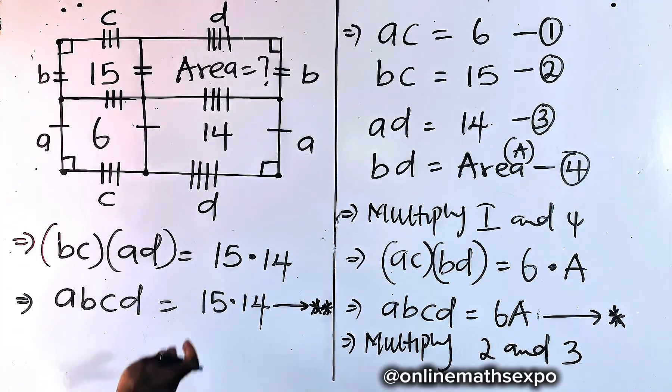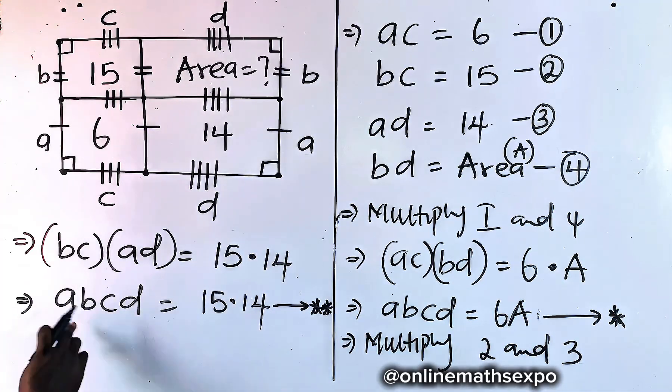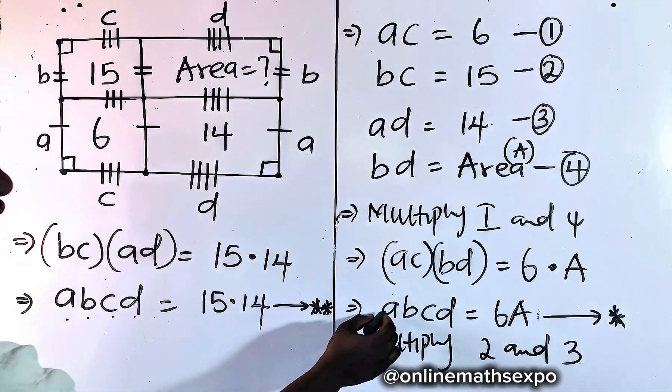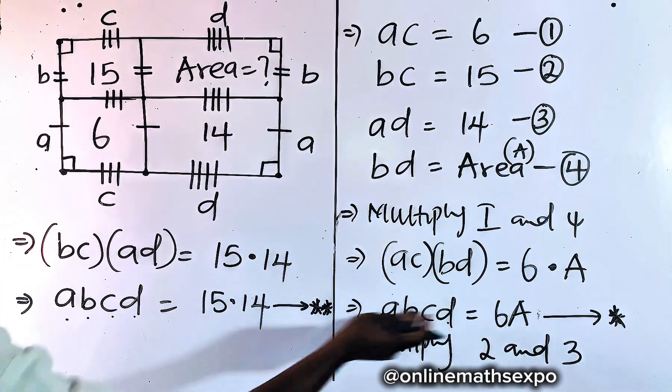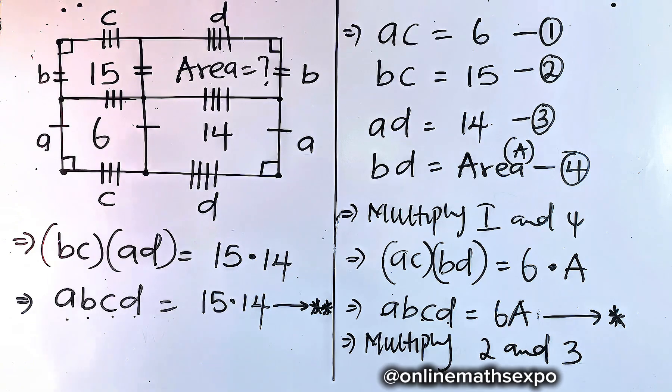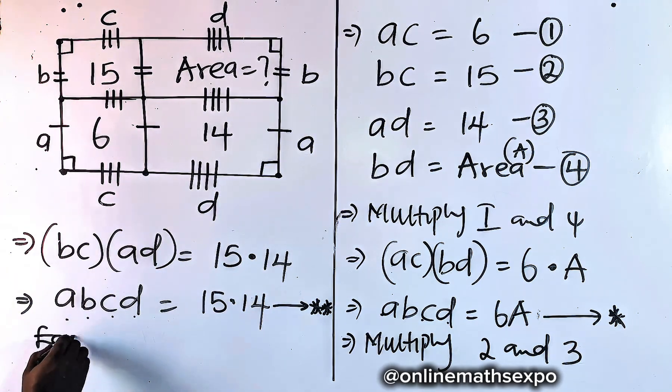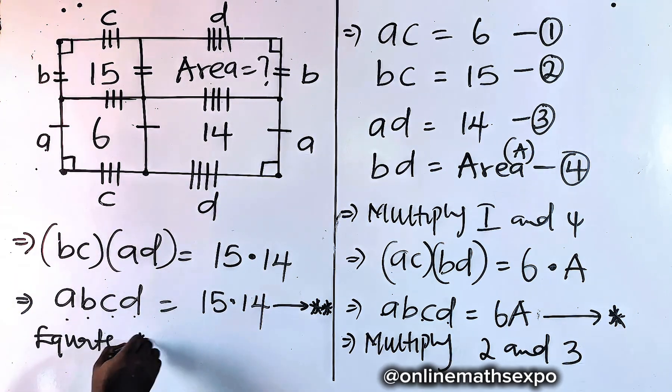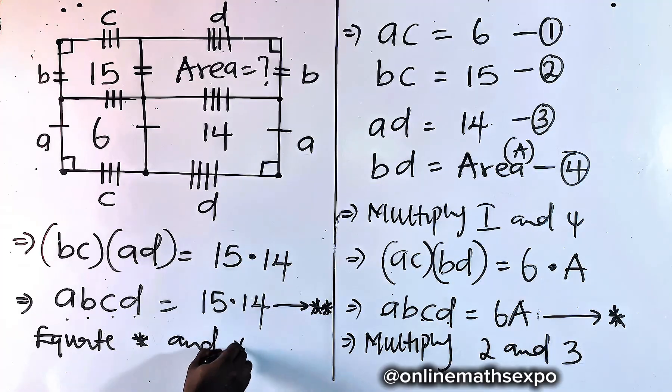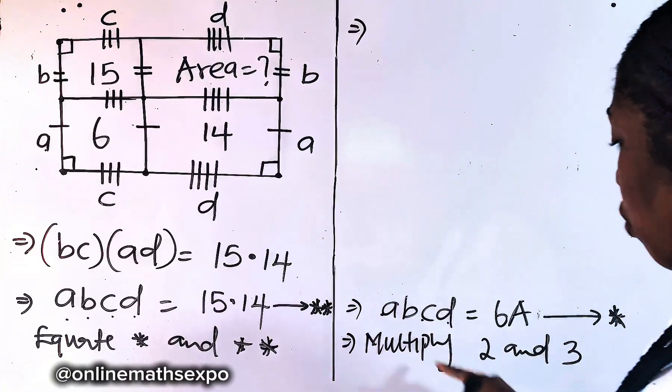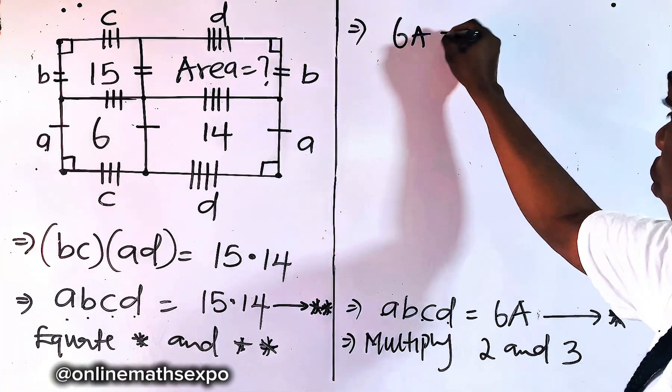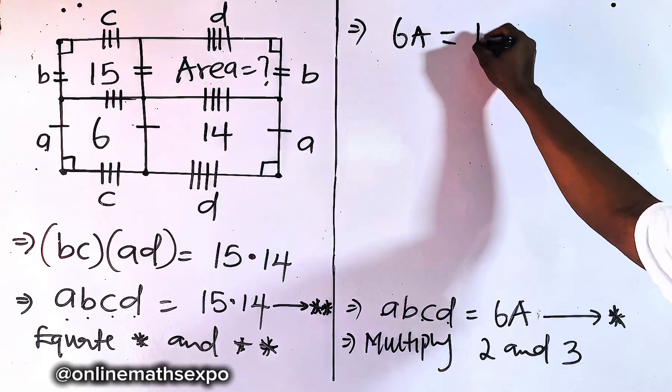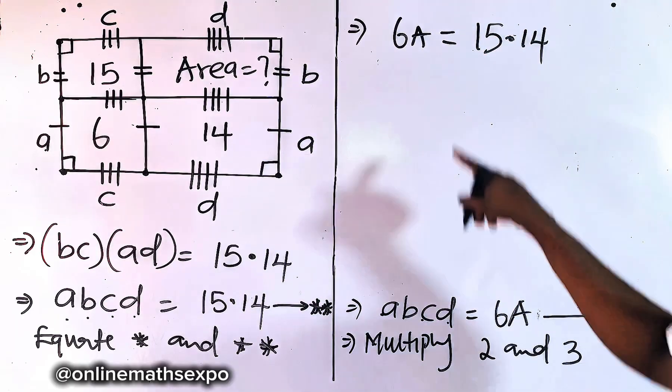Did you observe anything between these two? You observe that this is ABCD, and this is ABCD. So the two sides are the same. It means the equation is equal. So what we do is we are going to equate. So we equate the two equations together. So to do that, we are going to have, so this gives us, so we are going to have 6A should be equal to 15 multiplies 14.